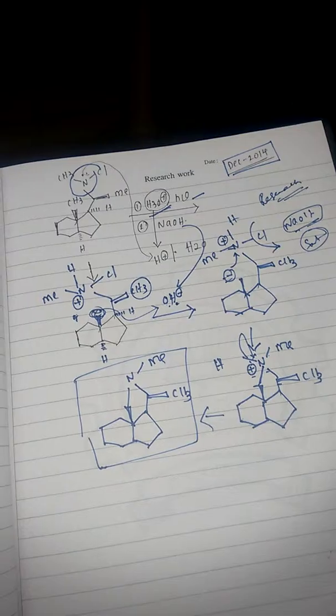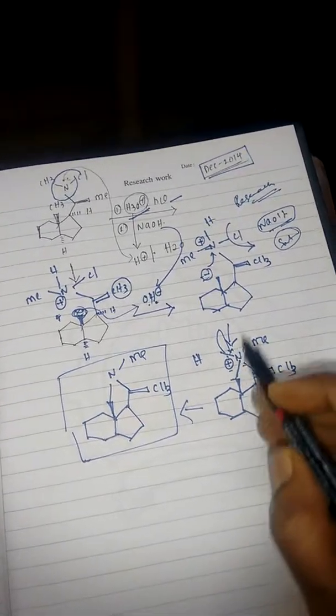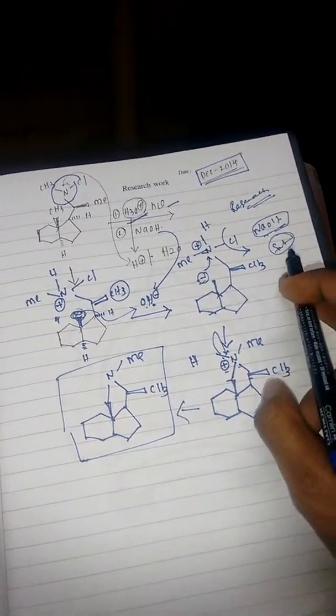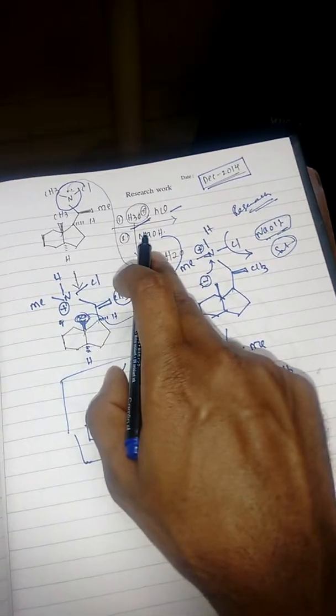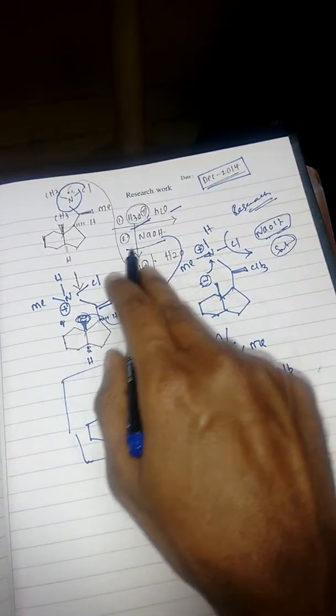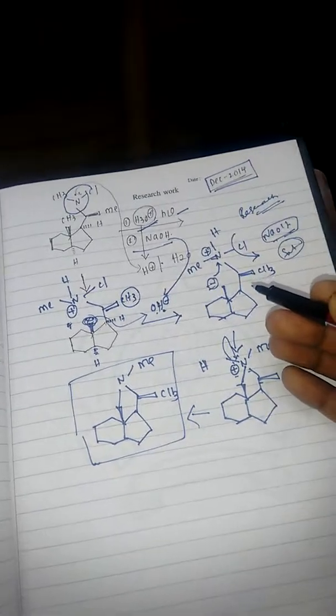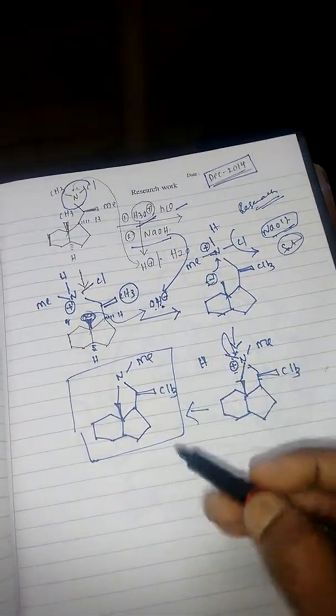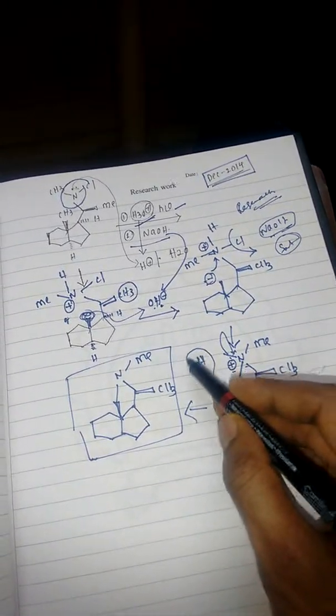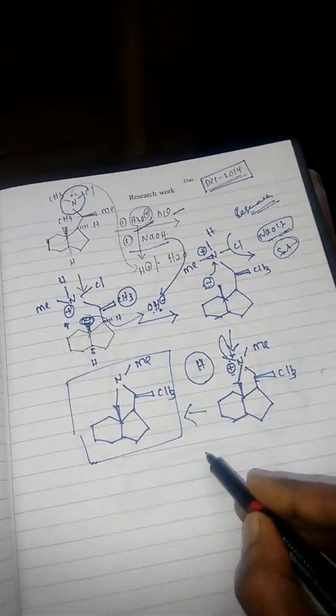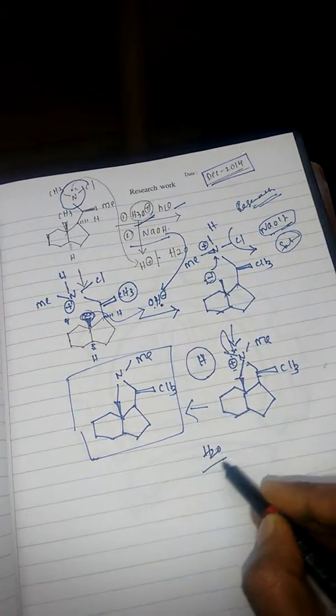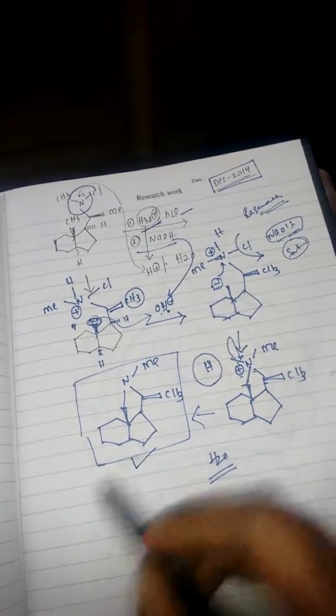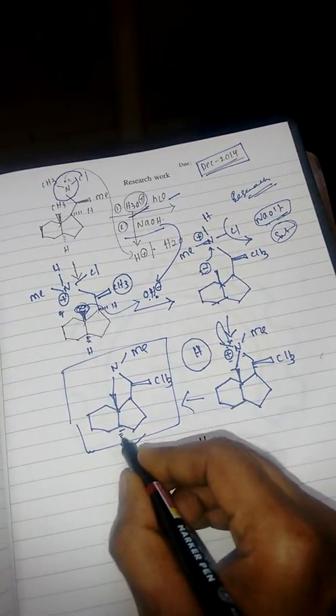Whatever OH- is left in the reaction mixture will abstract this hydrogen, so it will be removed as water. Finally you end up with this compound, the nitrogen is there. This is the product. Thank you. If you like my videos please subscribe to my channel.